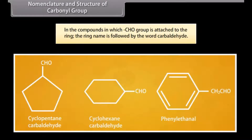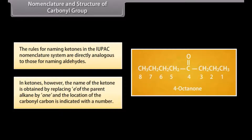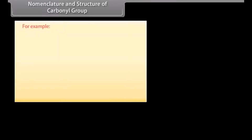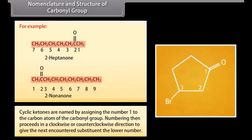The rules for naming ketones in the IUPAC nomenclature system are directly analogous to those for naming aldehydes. In ketones, however, the name is obtained by replacing the '-e' of the parent alkane with '-one', and the location of the carbonyl carbon is indicated with a number. For example: 2-heptanone, 2-nonanone. Cyclic ketones are named by assigning the number 1 to the carbon atom of the carbonyl group, then numbering proceeds clockwise or counterclockwise to give the next substituent the lower number.